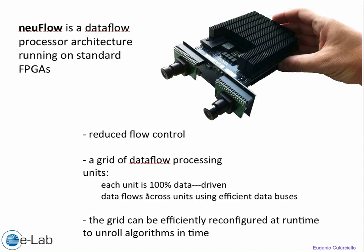This FPGA has a reduced amount of control overhead — we can send data directly and get it processed immediately without stopping, because of the large number of processing units inside, including the multiply-accumulate units. The computational grid of NeoFlow is basically an array of processing units — multiply-accumulate units and other linear operators — and most of these units are 100% data-driven, so data flows across configurable buses into the machine, gets operated upon, and gets sent back to memory or to the outside.